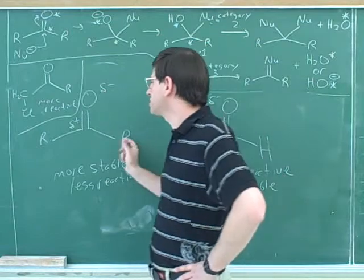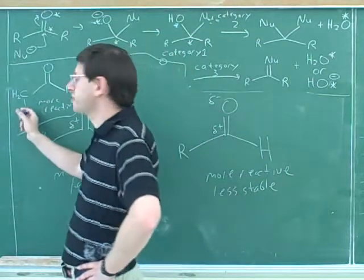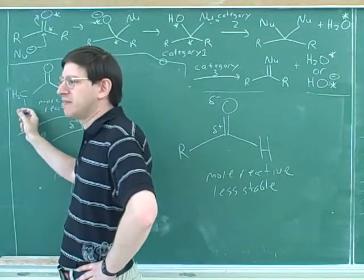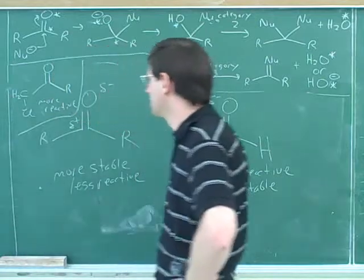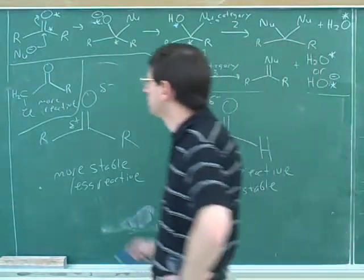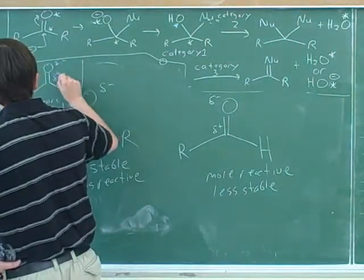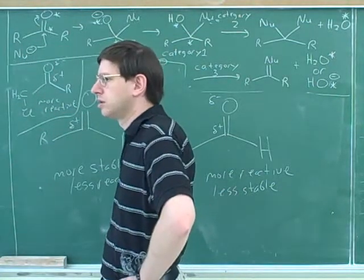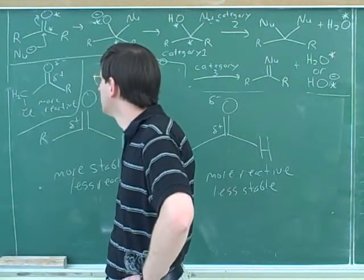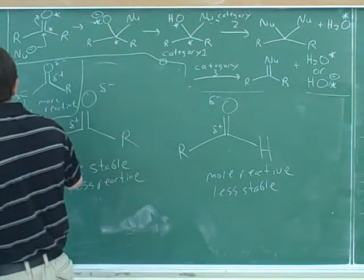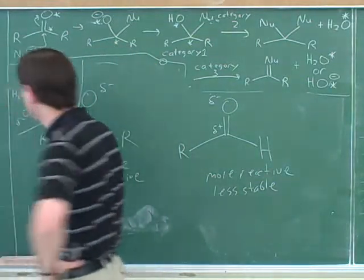Less stable. Well, after all, we said that electron donors are stabilizing. So electron withdrawers must be destabilizing. Because if you draw the dipole moments on the lone pairs of the chlorine, then there's going to be one going up towards oxygen, one going down towards chlorine, right?